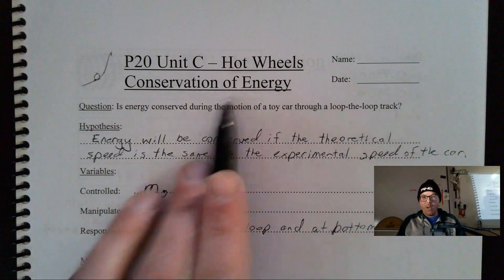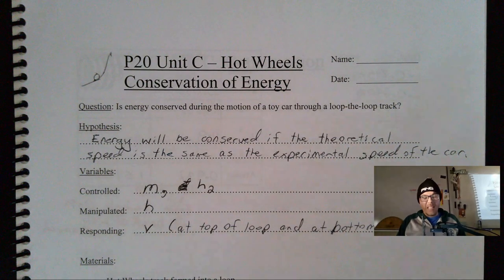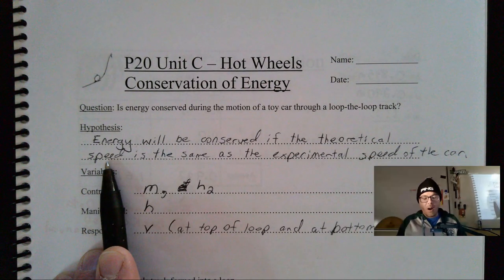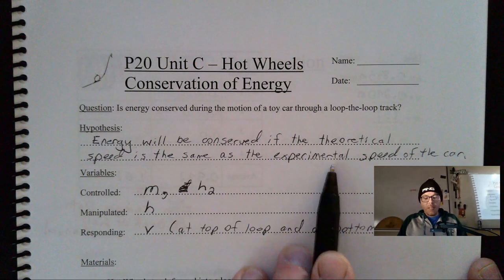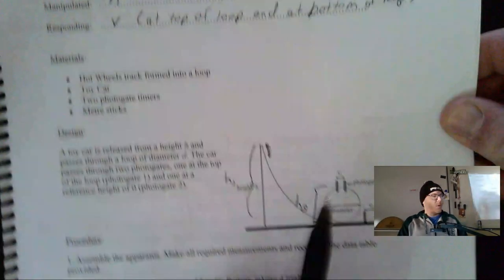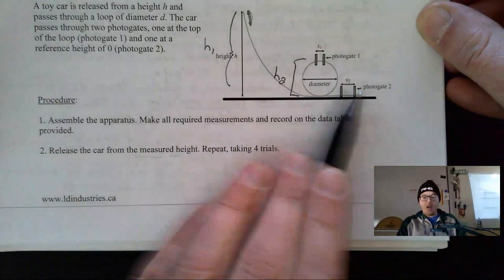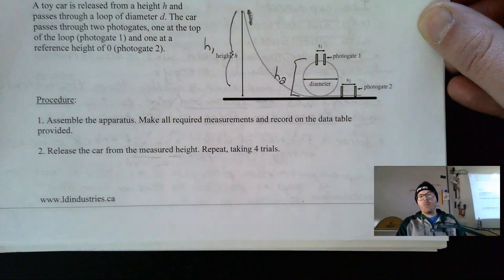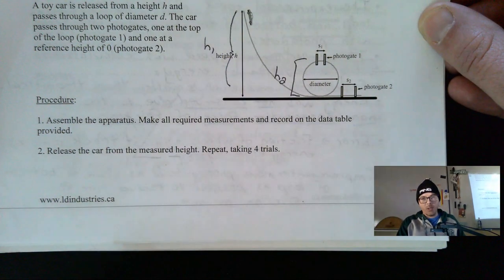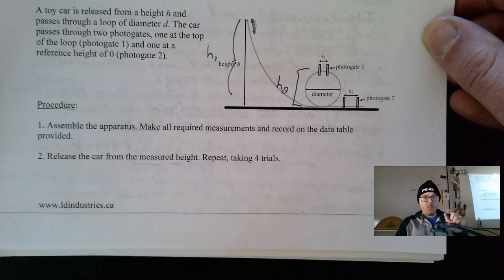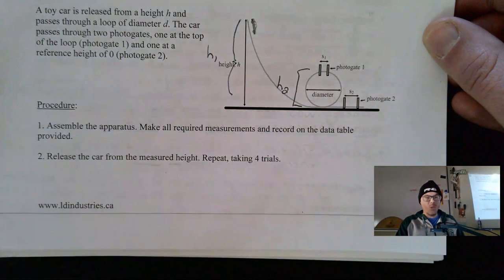Let's start with the Hot Wheels conservation of energy lab. In this lab, and in fact in every lab, our hypothesis is more or less the same. We're comparing the theoretical speed of the car to the experimental speed of the car. We measured experimental speeds with photogates — one at the top of the loop, photogate one, and one at the bottom of the loop, photogate two. We compare those to the theoretical speeds calculated using conservation of energy. If those speeds are similar, energy was conserved; if different, we'll explain why.